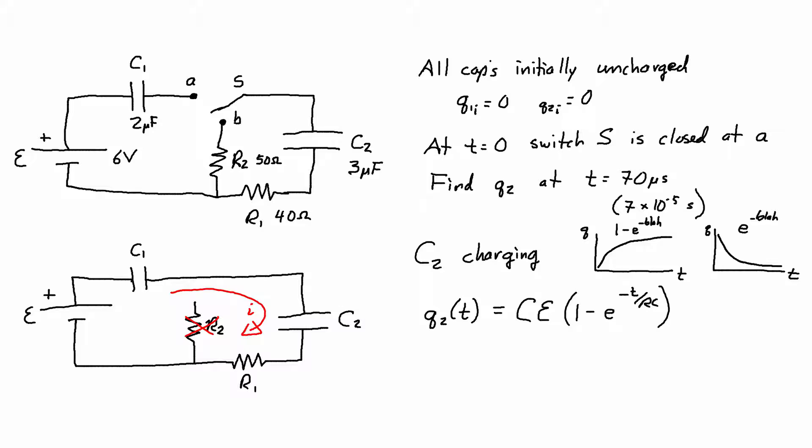And the question here is what value do I use for C and what value do I use for R? T is given 7 times 10 to the negative 5 seconds, but I really need to be careful about C and R.